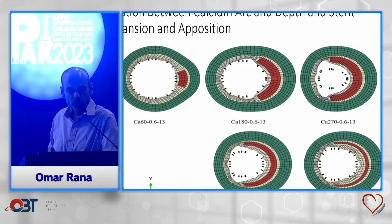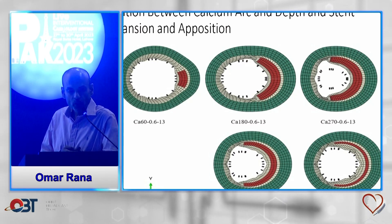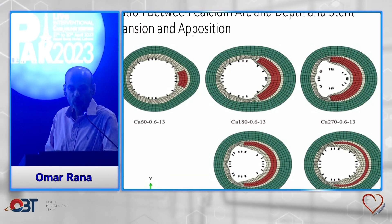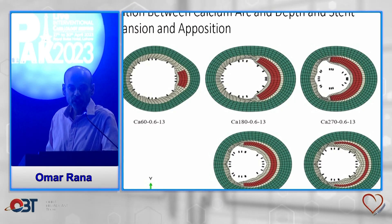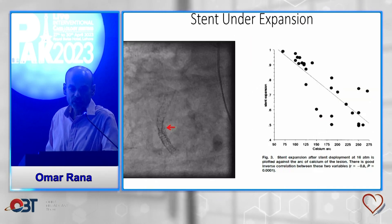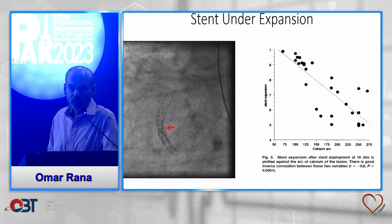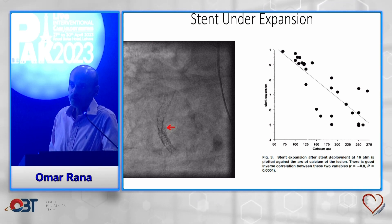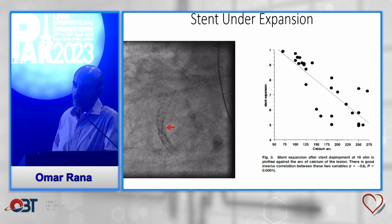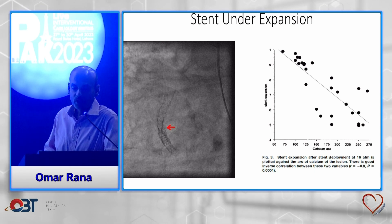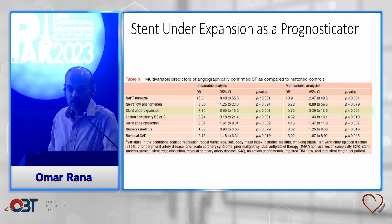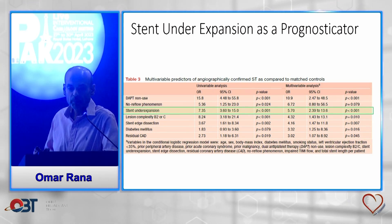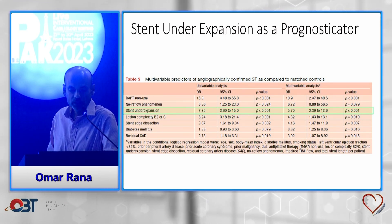Mechanistic data has shown that not only the calcium arc, but also the depth of calcium in the vessel wall is associated with stent underexpansion and malapposition. Stent underexpansion is inversely proportional to the arc of calcium present around the coronary vessel, and stent underexpansion is an independent prognosticator for adverse outcomes.